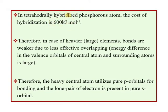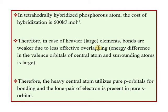If the hybridization cost is so high, why would it be preferred? For heavier elements, due to less effective orbital overlapping, the energy difference between the valence orbitals of the central atom and the surrounding atoms is large.